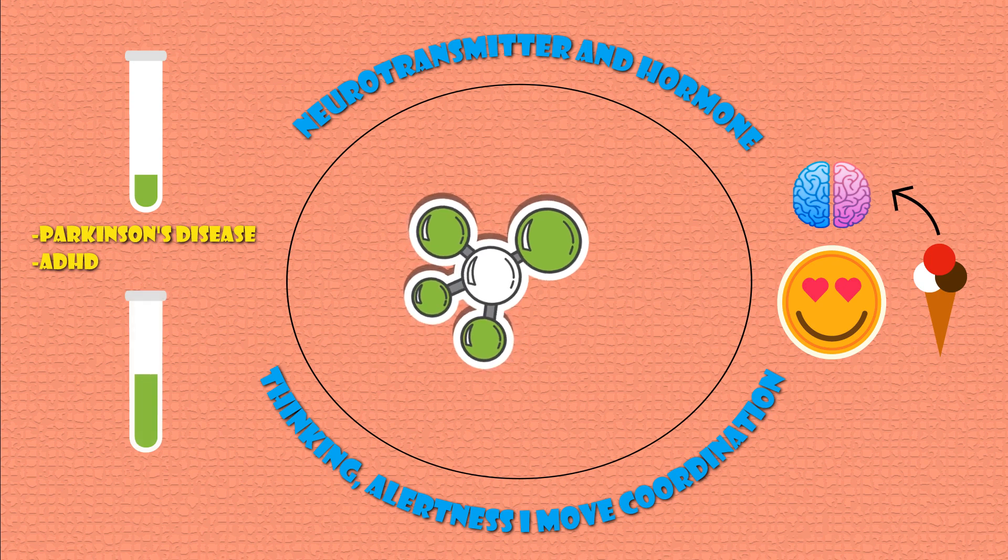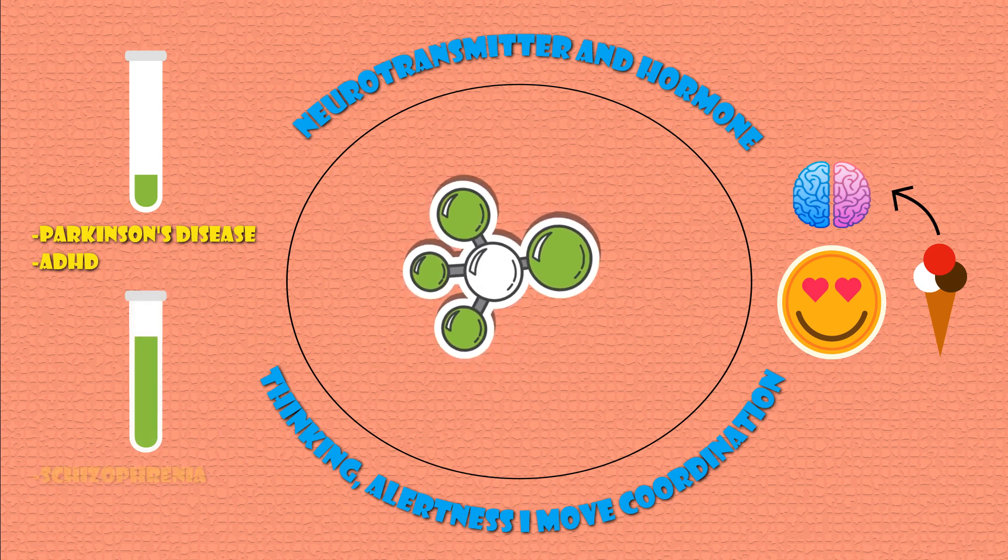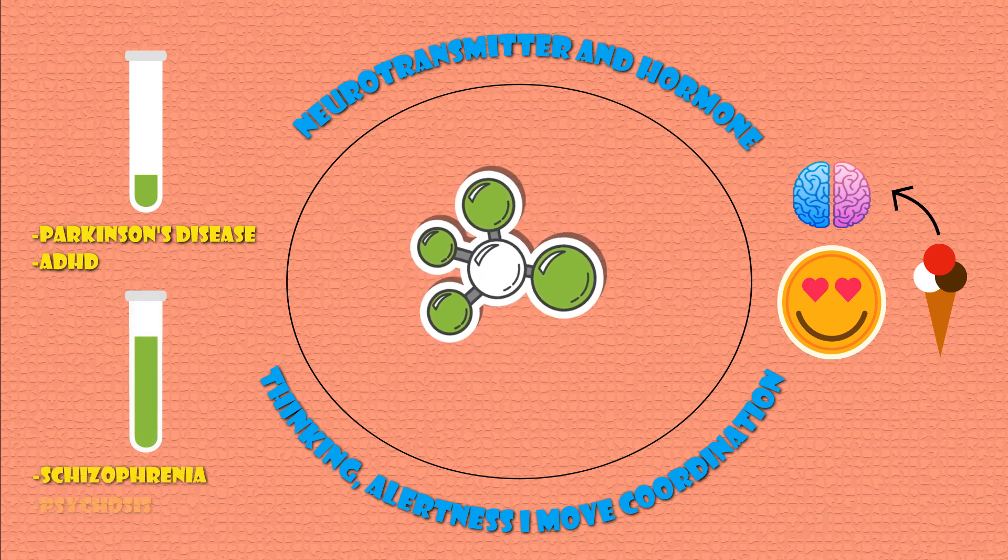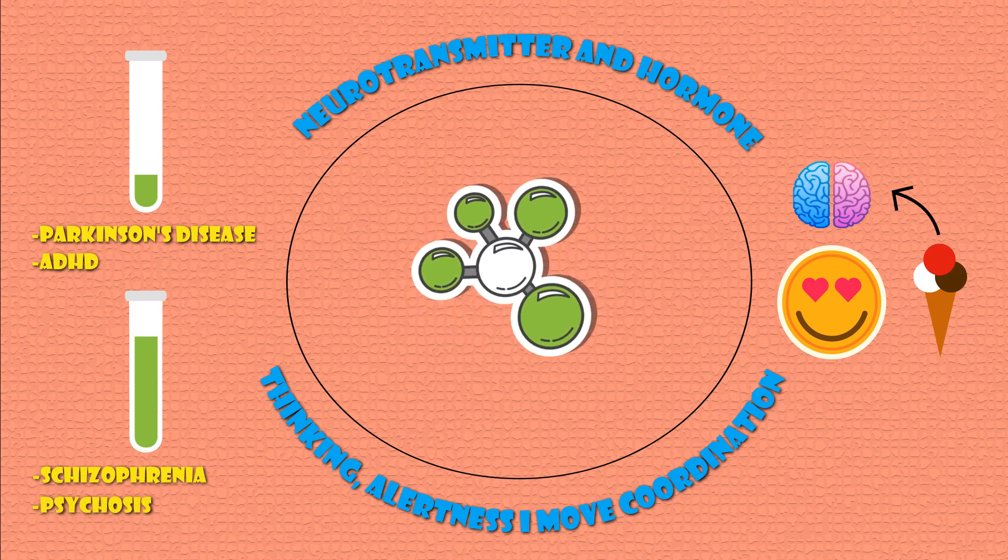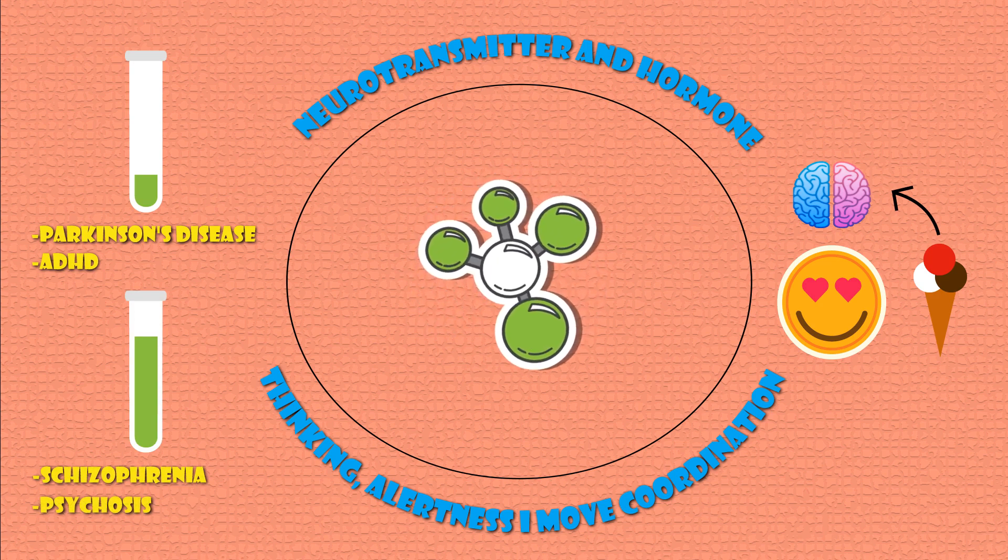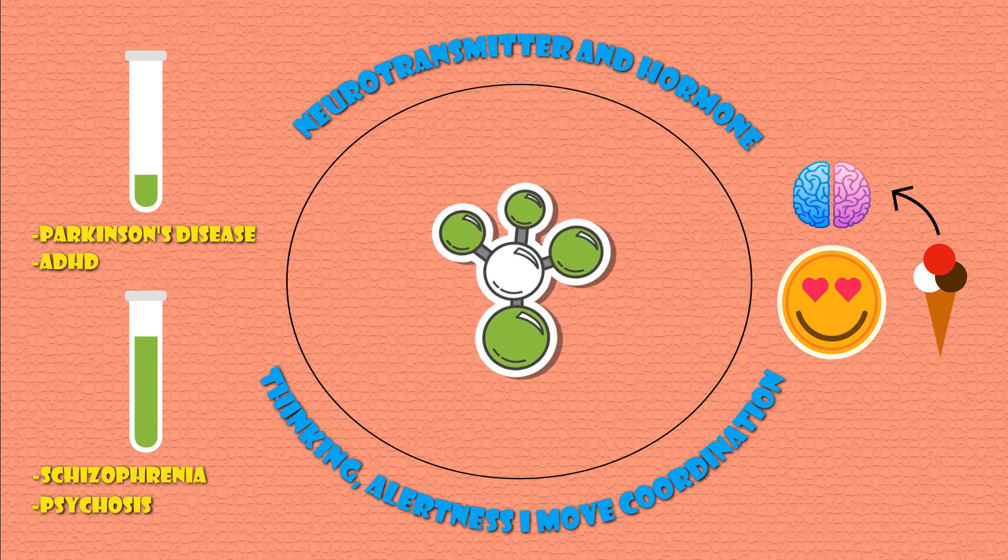Low dopamine levels are linked to Parkinson's disease and ADHD. On the other hand, very high levels of dopamine are associated with schizophrenia and psychosis. That's why drugs used in treatment of these conditions, called antipsychotics, work by blocking dopamine receptors, therefore decreasing dopamine.